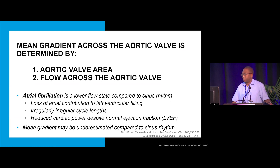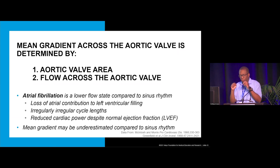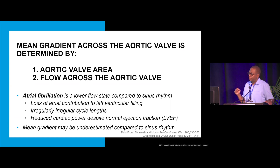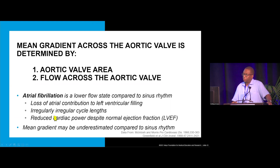Therefore, the mean gradient may be underestimated compared to sinus rhythm. For the same small valve area, the mean gradient in a patient with atrial fibrillation would be lower than in a patient in sinus rhythm for the same ejection fraction.